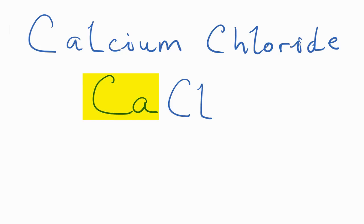But we're not done, because calcium is a metal and chlorine is a nonmetal. That means we have an ionic compound. Because it's ionic, we need to balance the charges.